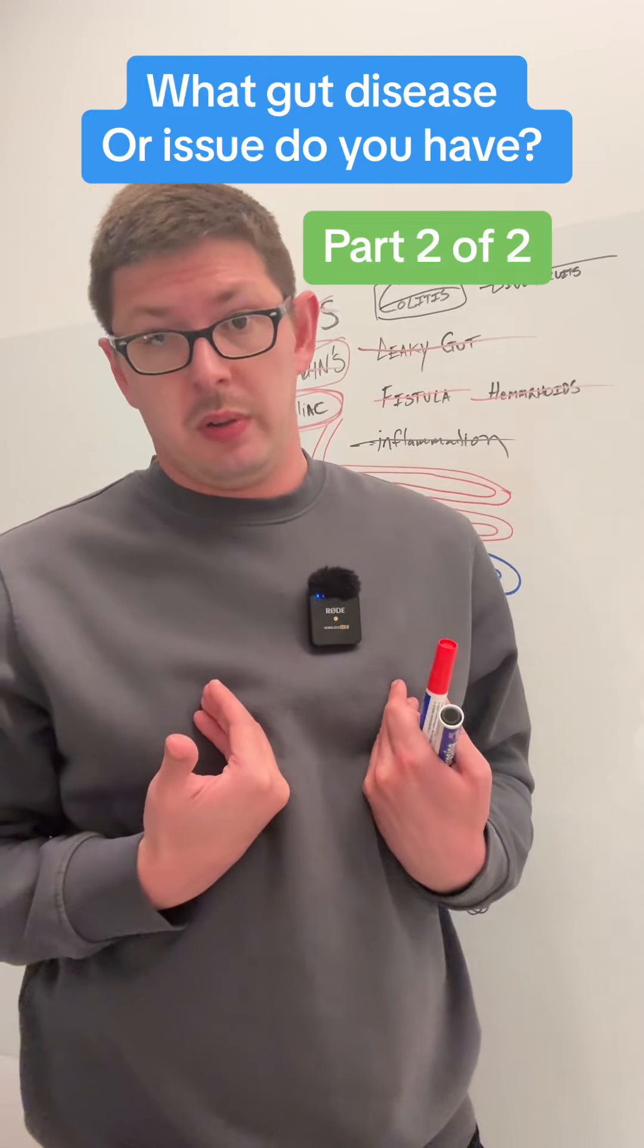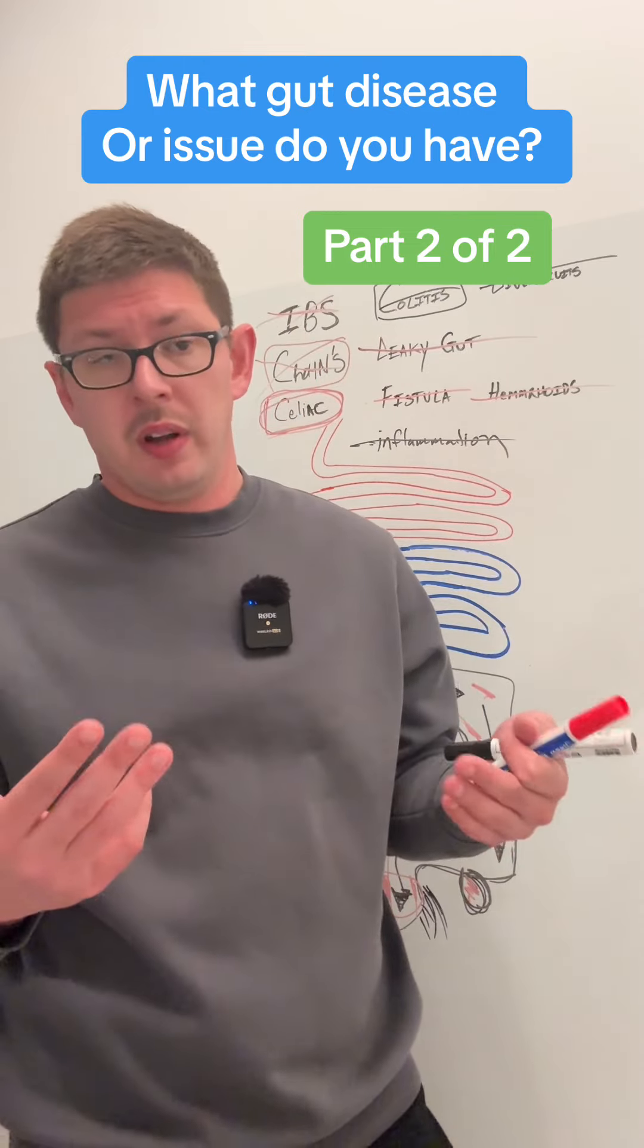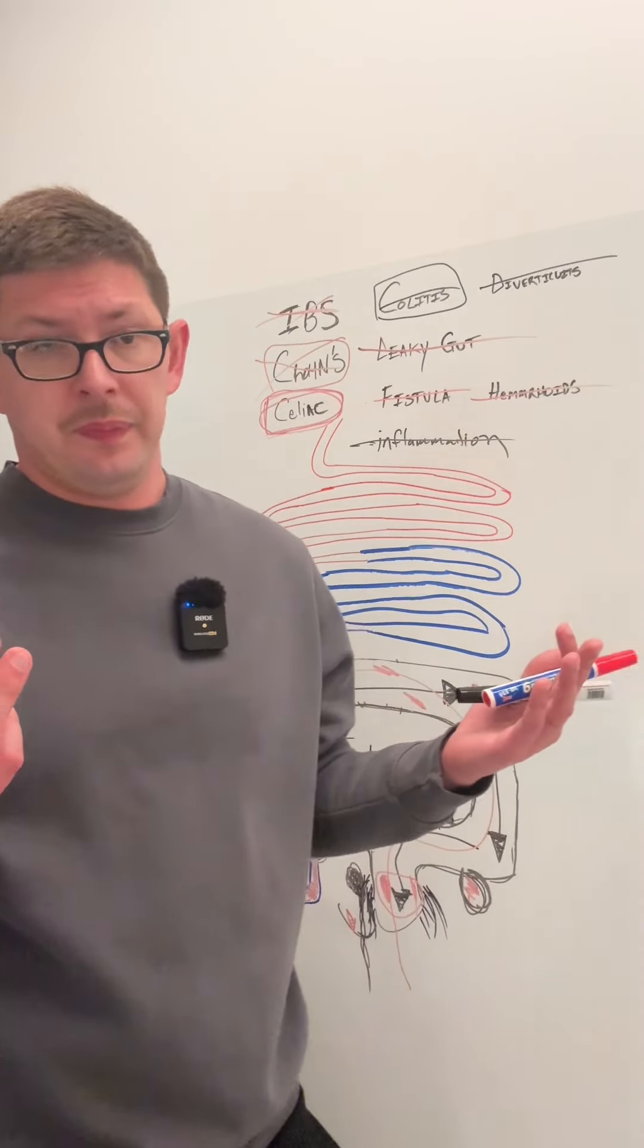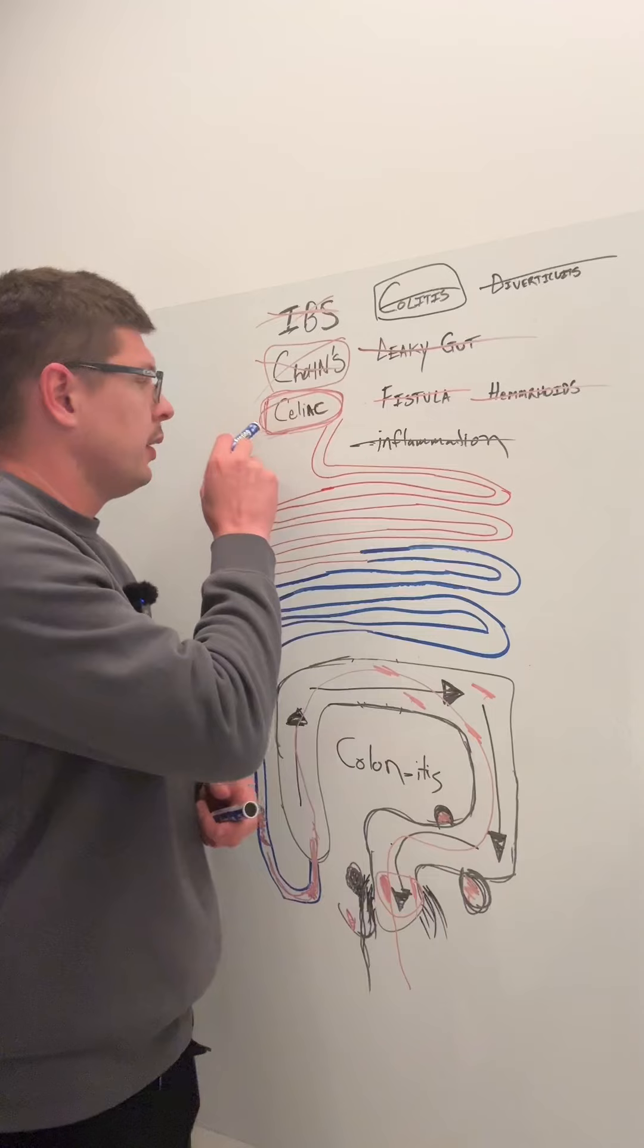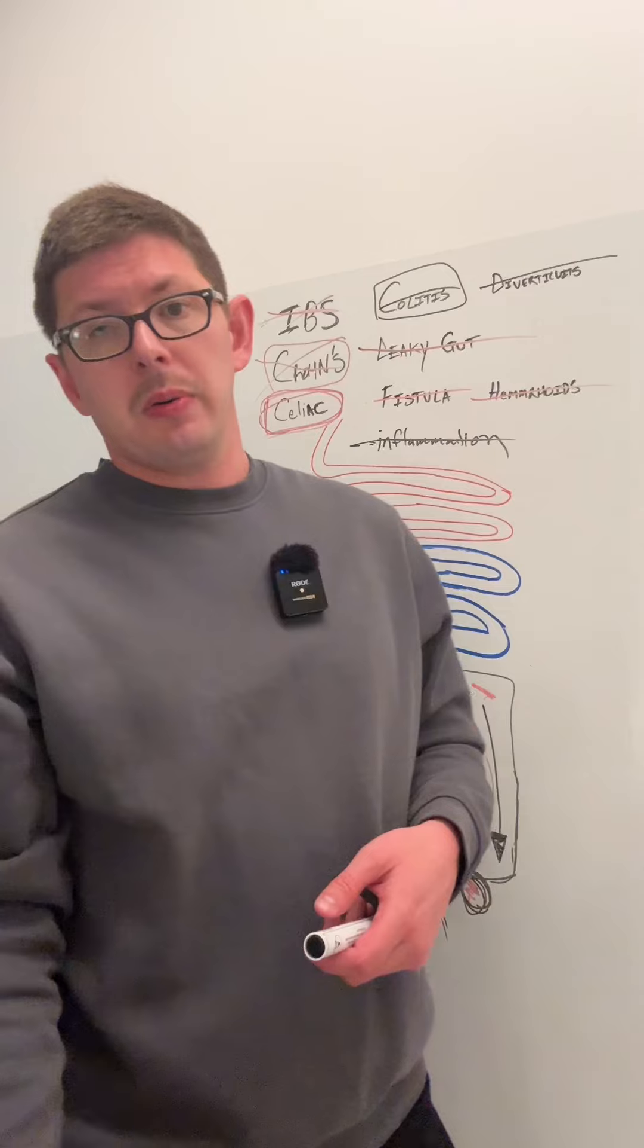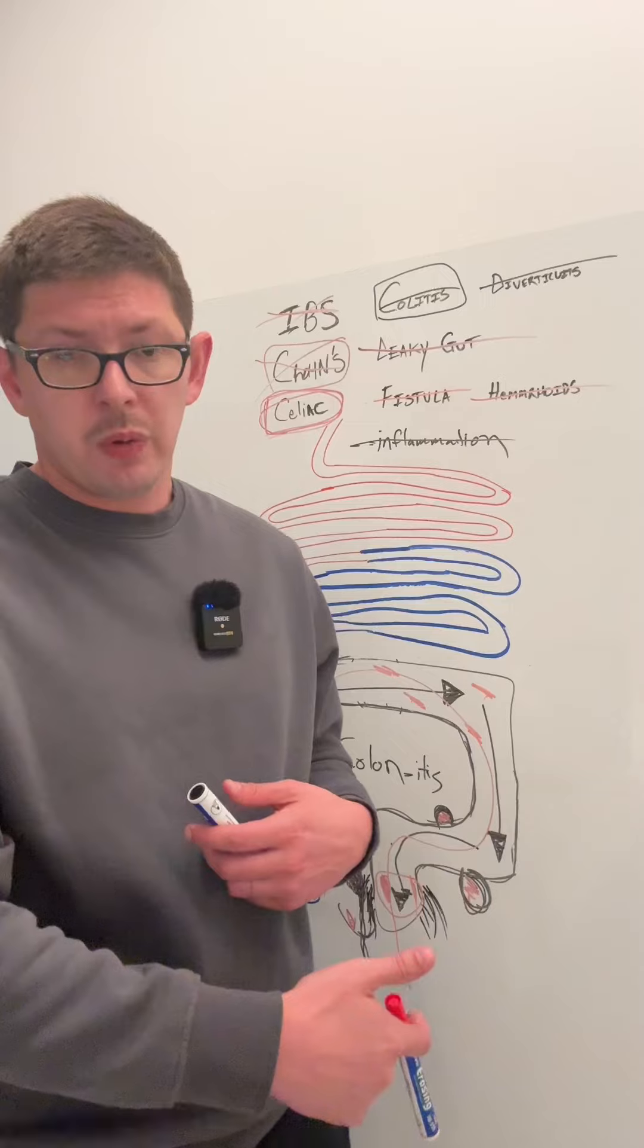We would literally be dead without gluten. Most of your ancestors were probably poor and lived off of gluten for a long time. We have made gluten a nocebo, the opposite of placebo with what we're doing.